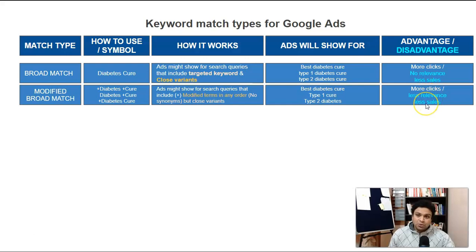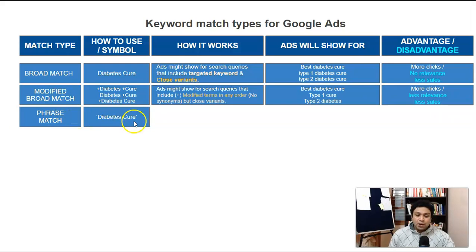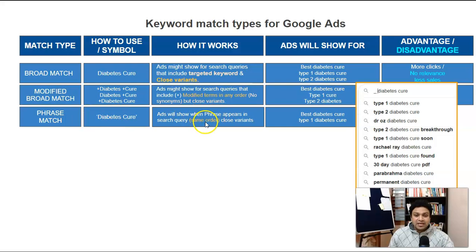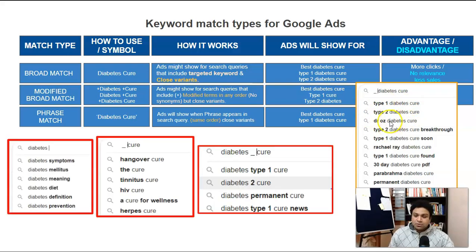Now phrase match. With phrase match, you wrap the keywords in quotation marks — 'diabetes cure.' By using this, you're telling Google: show the ad when this phrase appears in the search query in the same order. In broad match and modified broad match, keywords can appear in any order, but with phrase match they must appear in the same order, including close variants. So 'type 1 diabetes cure' or 'type 2 diabetes cure' would trigger the ad.